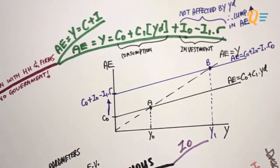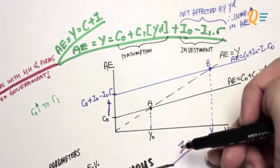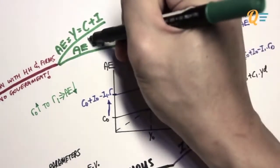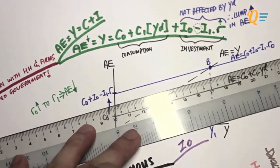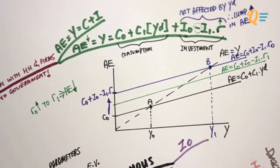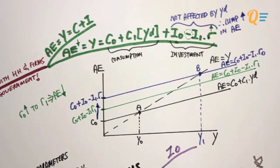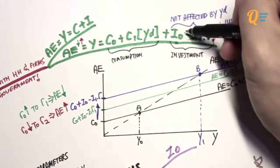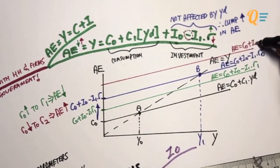Assuming real interest rates were originally at R0, let's see what happens if real interest rates rise to R1. This causes AE to fall because of the negative sign in front of I1. An increase in R causes a decrease in AE because you're deducting the total amount by a larger number, so the entire AE curve shifts down, resulting in a lower income. Conversely, if R0 falls to R2, AE increases due to the same negative sign, and the AE curve shifts upwards, giving a higher income.